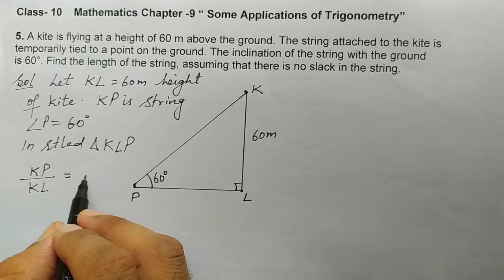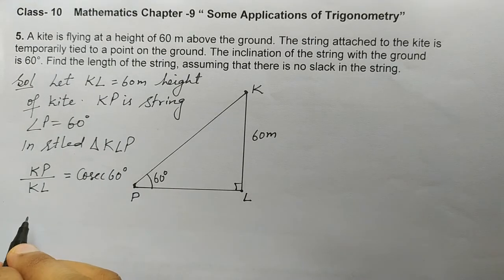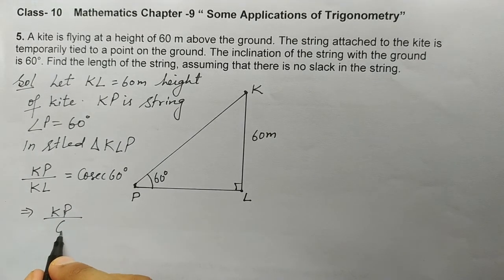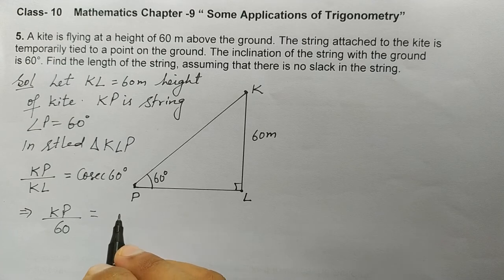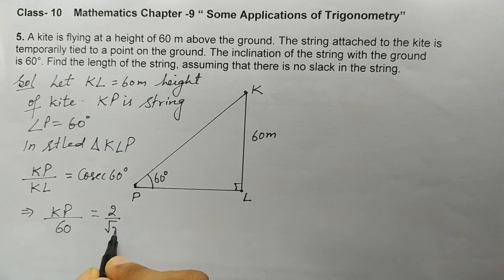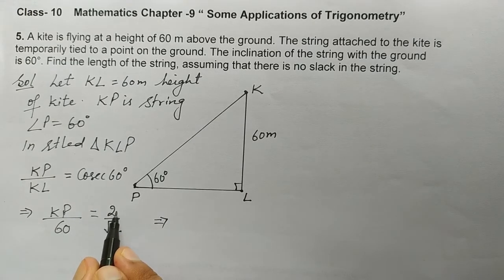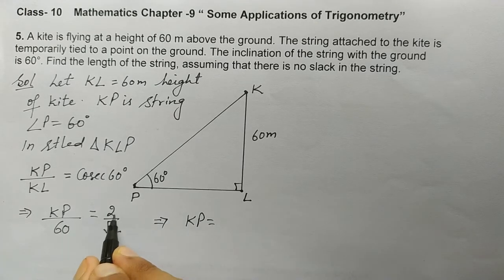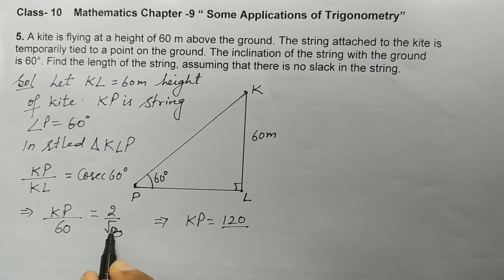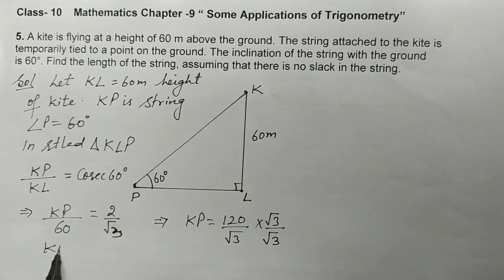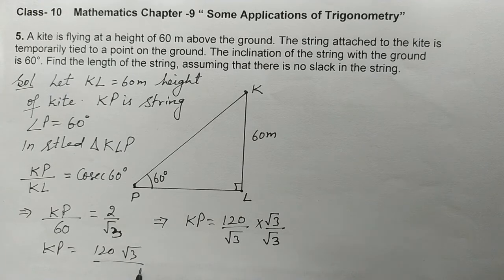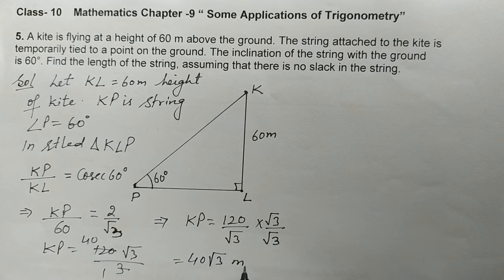So cosecant 60 degrees will come. KP divided by KL equals cosecant 60 degrees. KL is 60, and sine 60 degrees is √3/2, so cosecant 60 degrees is its reciprocal, that is 2/√3. Cross multiplying, KP = 60 × (2/√3) = 120/√3. Now we rationalize the denominator by multiplying numerator and denominator by √3, giving KP = 120√3 / (√3 × √3) = 120√3 / 3.